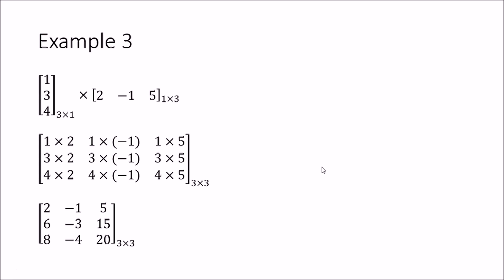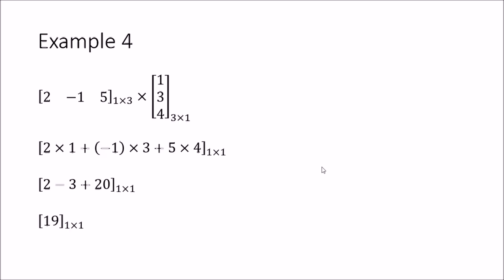In example four, we take the same two matrices but interchange them: [2, −1, 5] (a one-by-three matrix) multiplied with [1; 3; 4] (a three-by-one matrix). The column number of the first matrix and the row number of the second are both three, so we can multiply. The row number of the first is one and the column number of the second is one, so the resultant is a one-by-one matrix — a single term. Computing: 2×1 + (−1)×3 + 5×4 = 2 − 3 + 20 = 19.